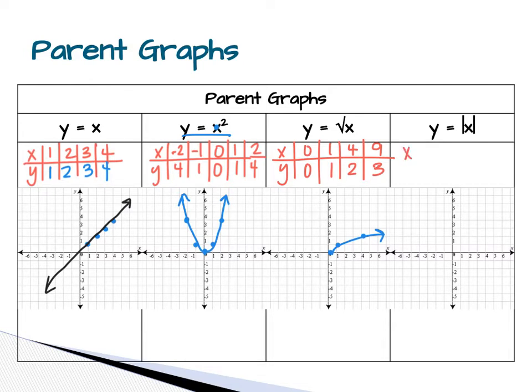The last one is absolute value. You need to choose negative 2, negative 1, 0, 1, and 2. The absolute value of negative 2 is 2. The absolute value of negative 1 is 1, 0 is 0, 1 is 1, 2 is 2. So when I graph my points, I go negative 2 up 2, negative 1 up 1, 0, 0, 1, 1, 2, 2. It kind of looks similar to our parabola graph, but it's different because both sides are linear. They just have opposite slopes. So it makes a V. This one makes a V. This one makes a curve. This one makes a U. And this one makes a line.